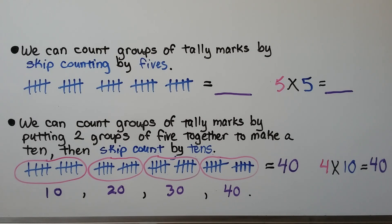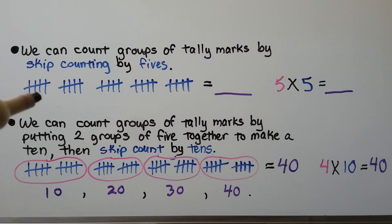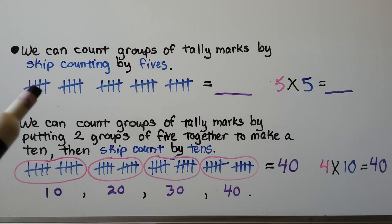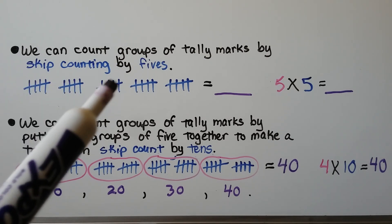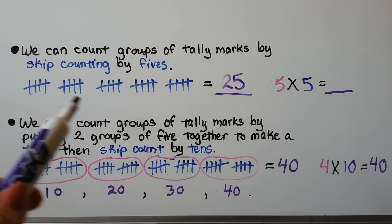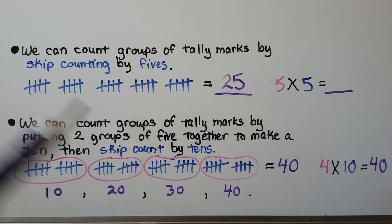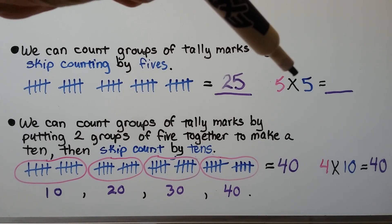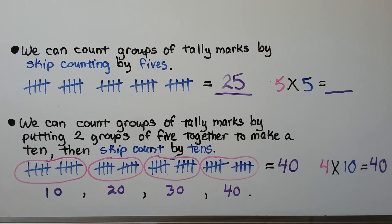We can count groups of tally marks by skip counting by 5s. For tally marks, we have 4 vertical lines and when we have the fifth one, we cross that group of 4 to make a group of 5. We can skip count by 5s: 5, 10, 15, 20, 25. We have 5 groups of 5 — that's 5 times 5, which is equal to 25.